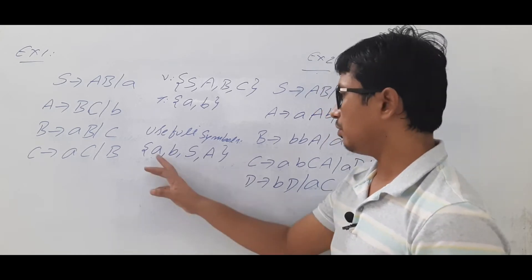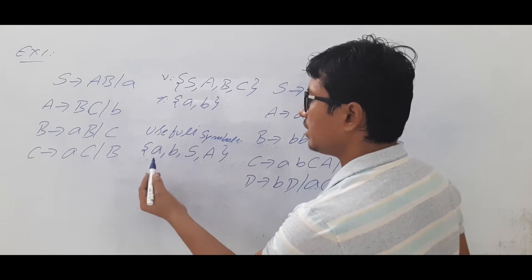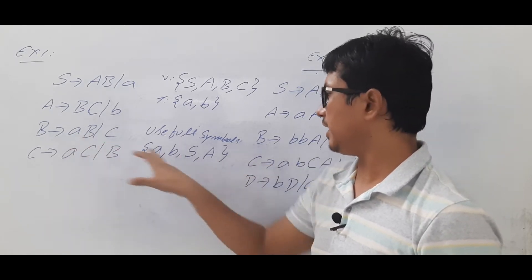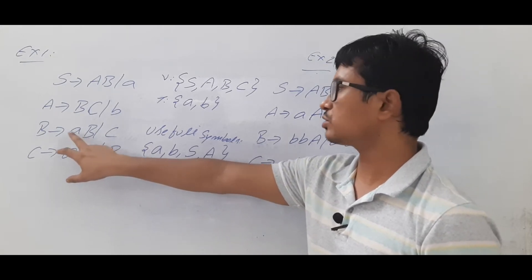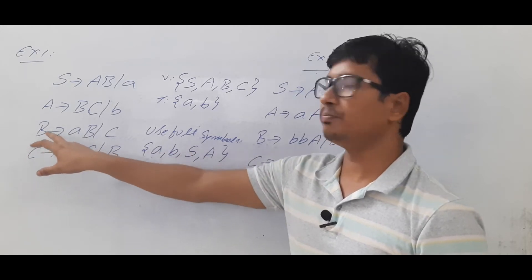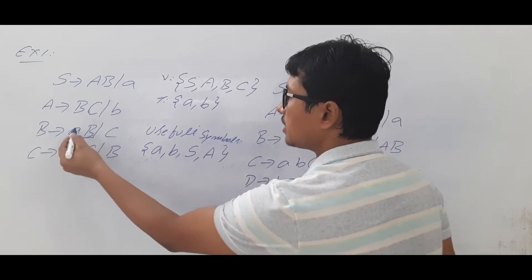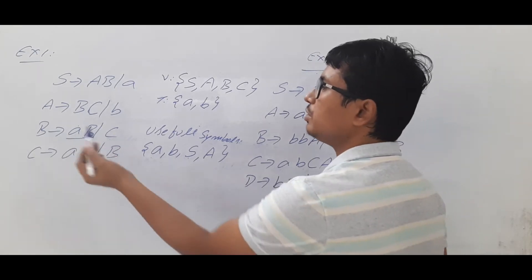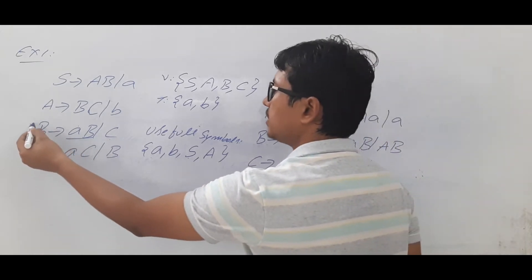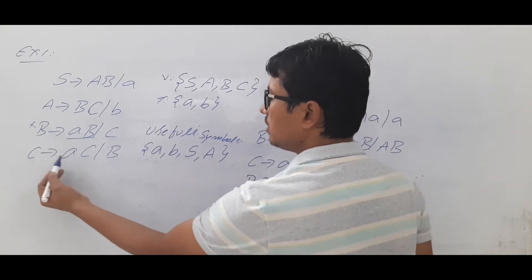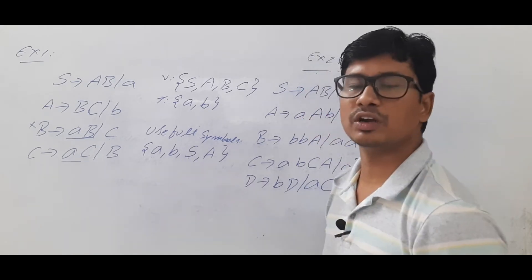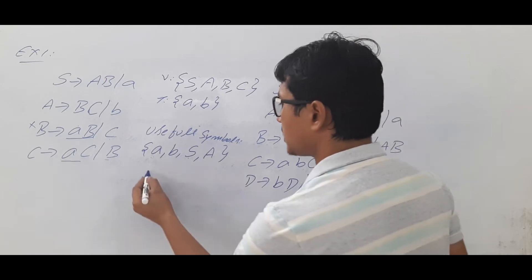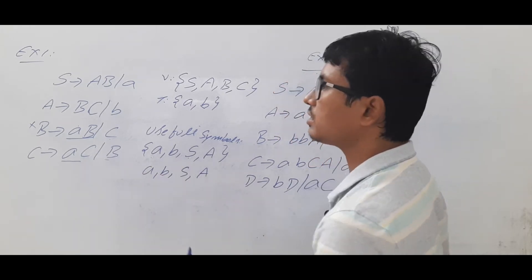We increment and check combinations. B and C are not yet included. Checking B: its production contains 'ab', but capital B is not in the set, so we cannot determine any terminal from B directly or indirectly. For C: its production gives 'ac', A is in the set but C itself is not, and B is also not in the set, so we cannot add any further useful symbols.